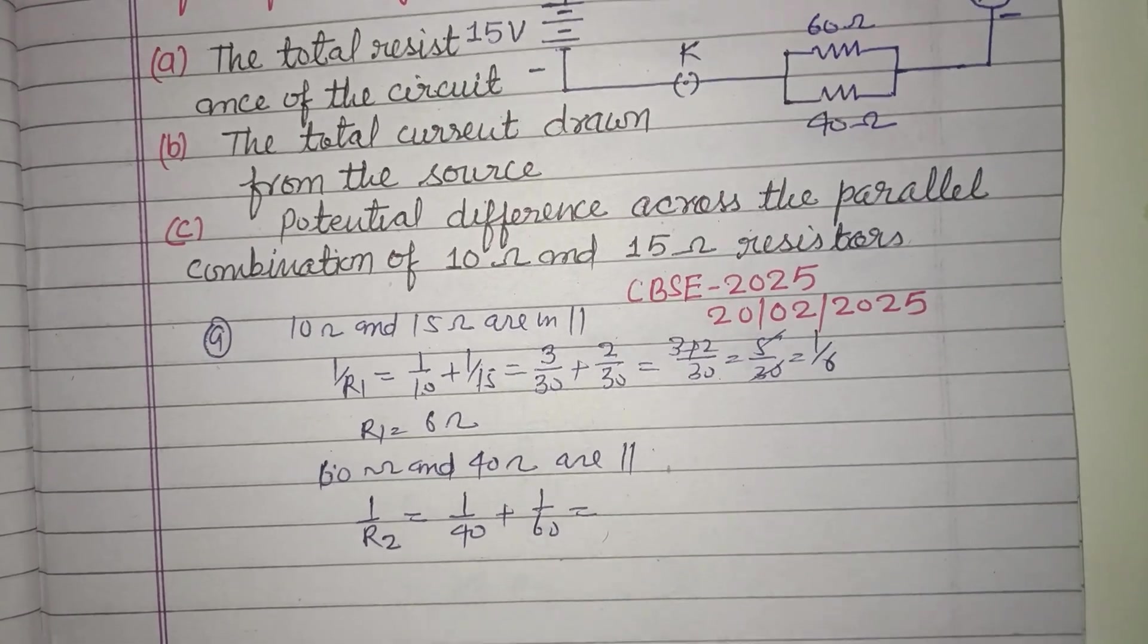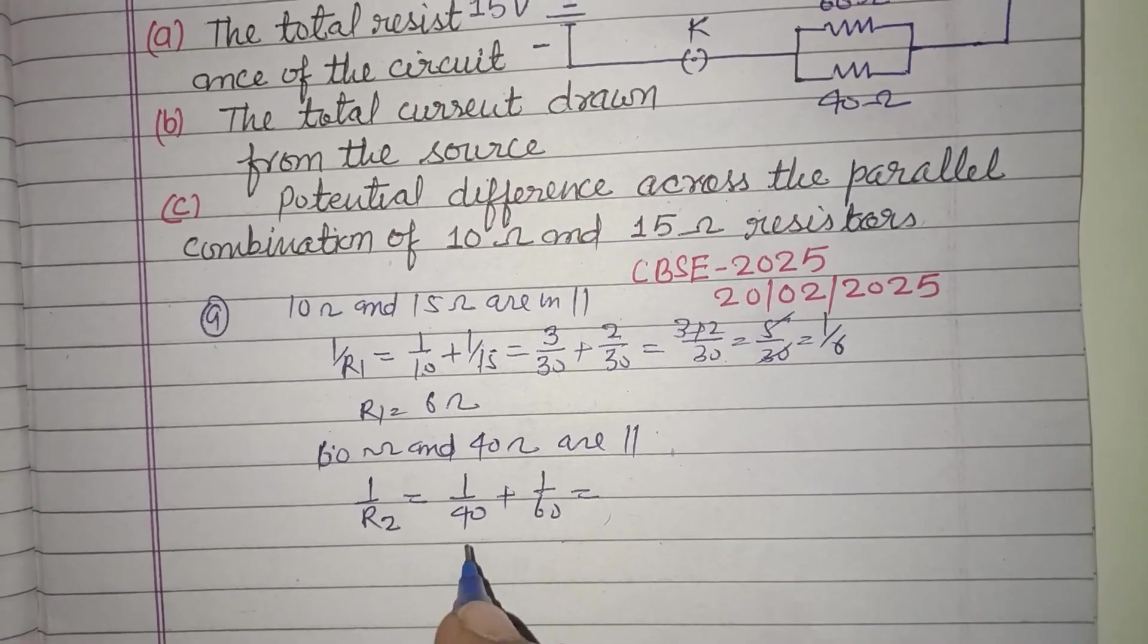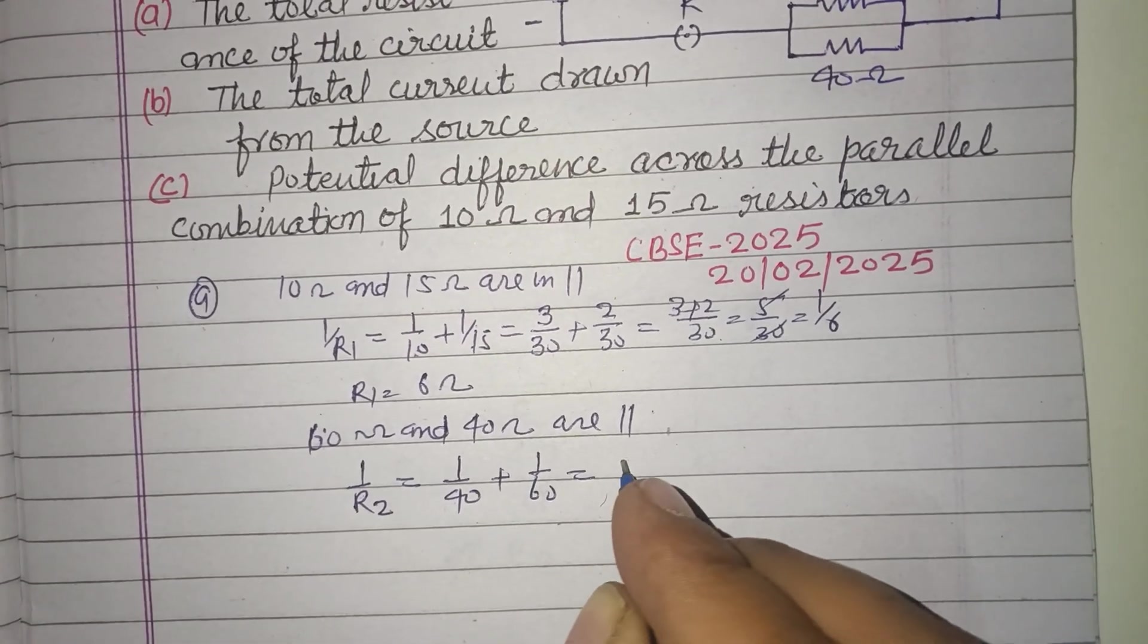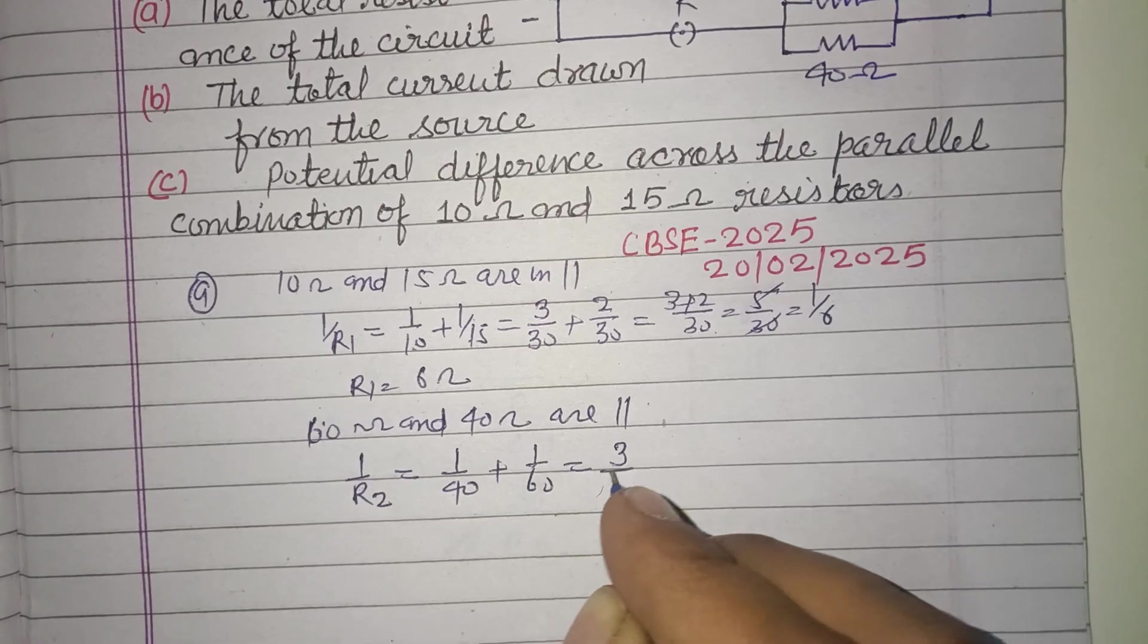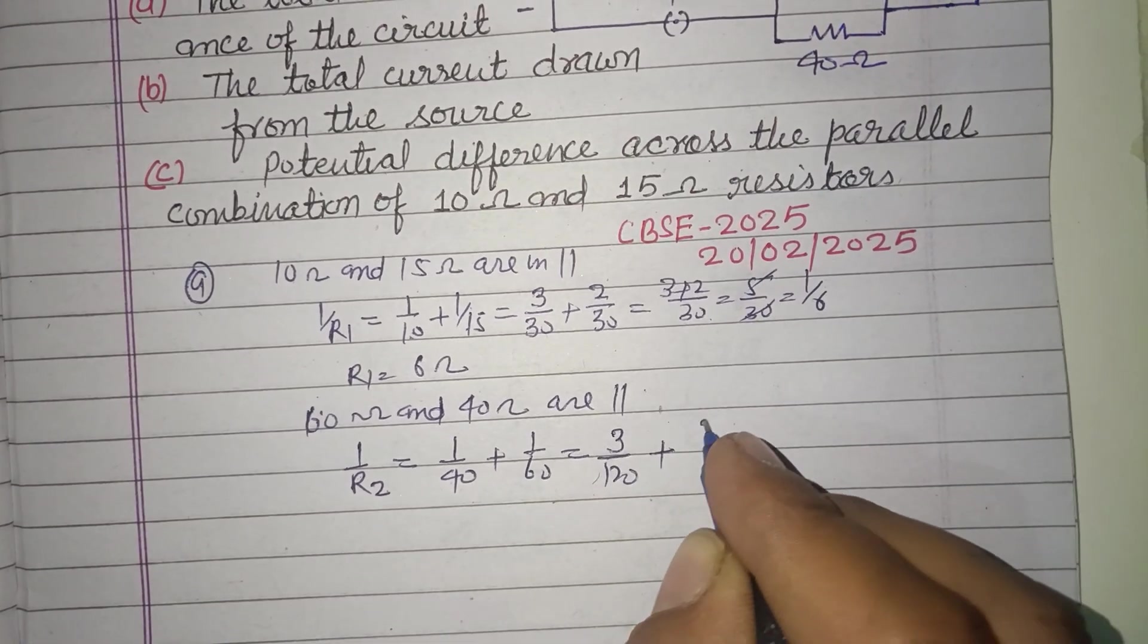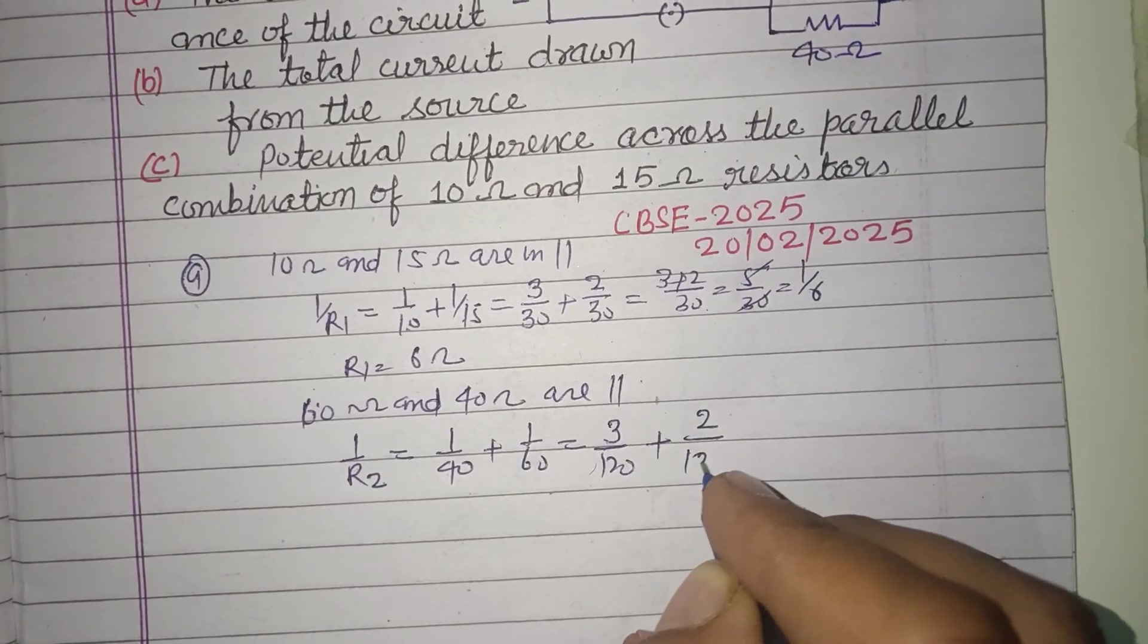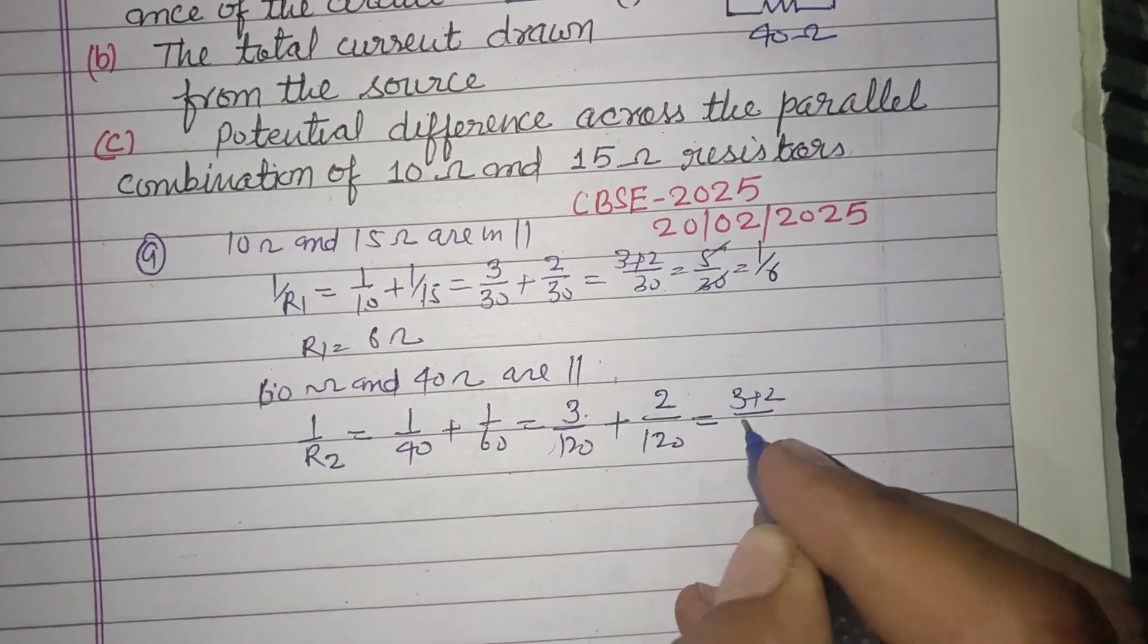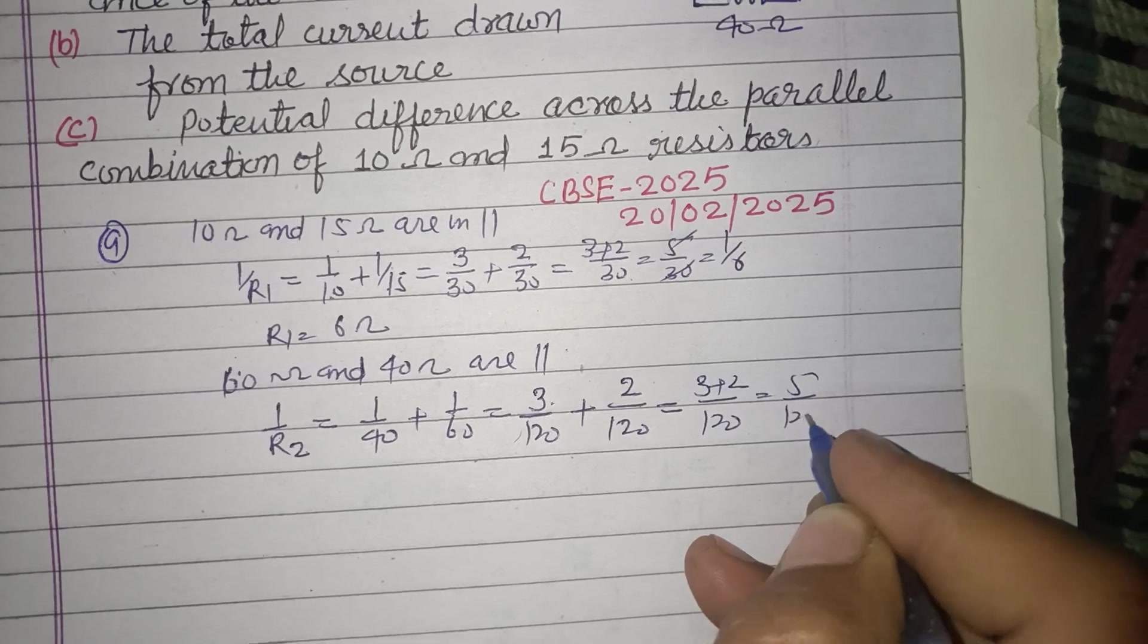120 is the LCM, so we write here 3 upon 120 and 2 upon 120. Denominator becomes same, 3 plus 2 upon 120, that is 5 upon 120. 120 divided by 5 is 24. So R2 is 24 ohm.